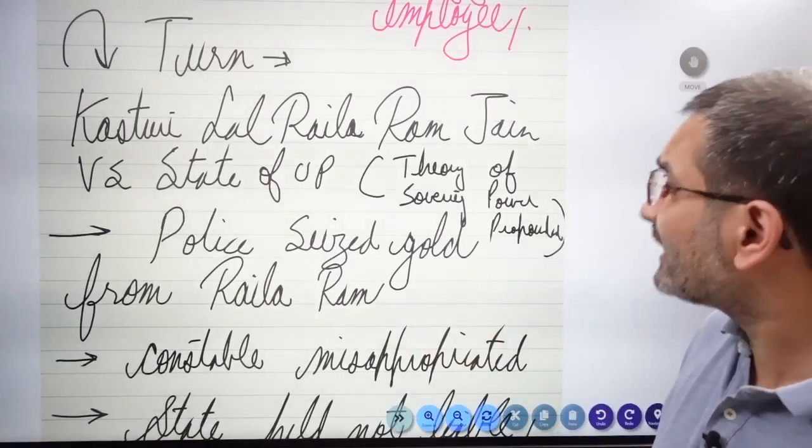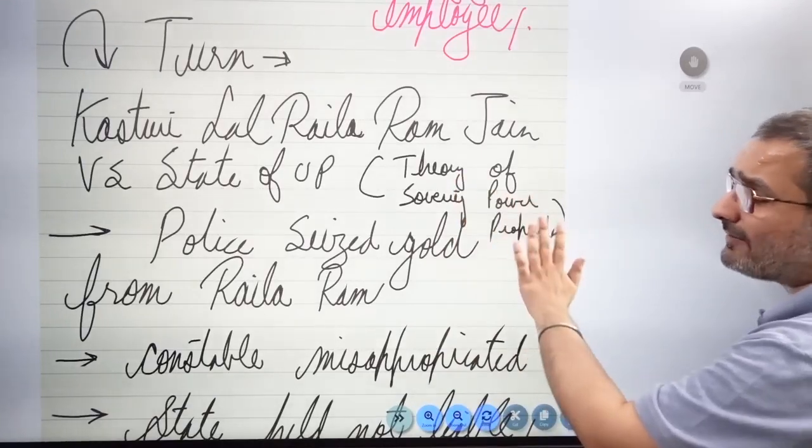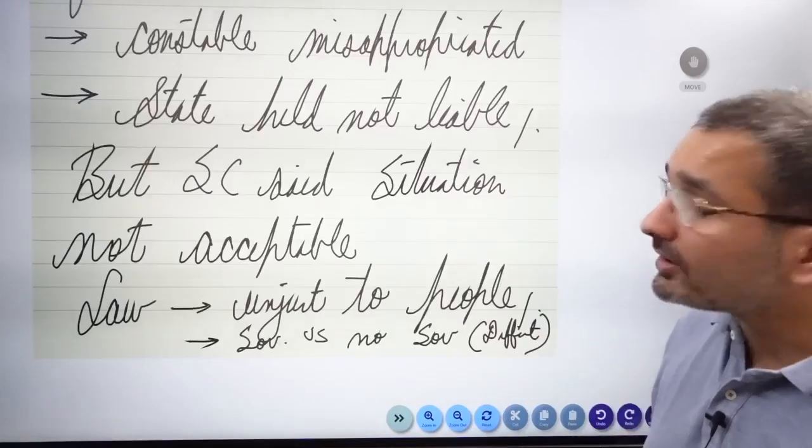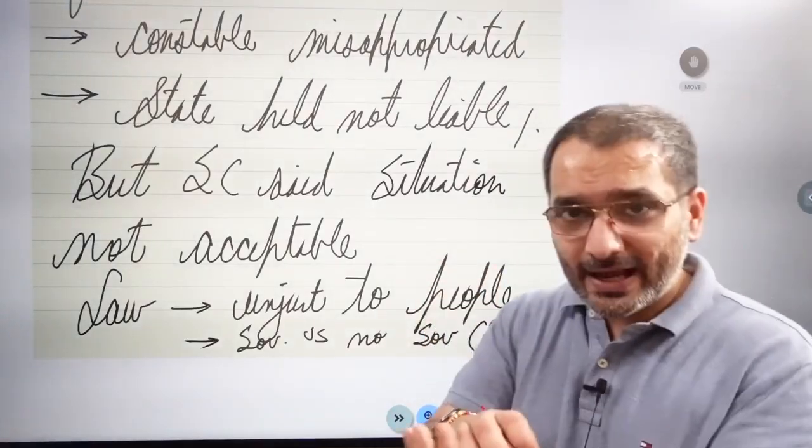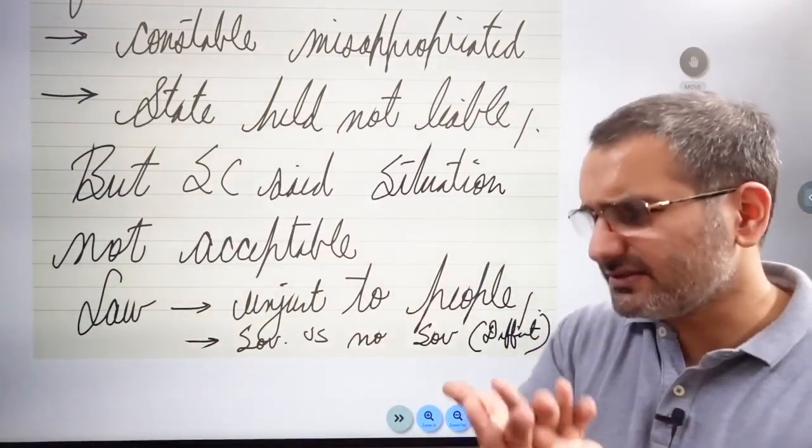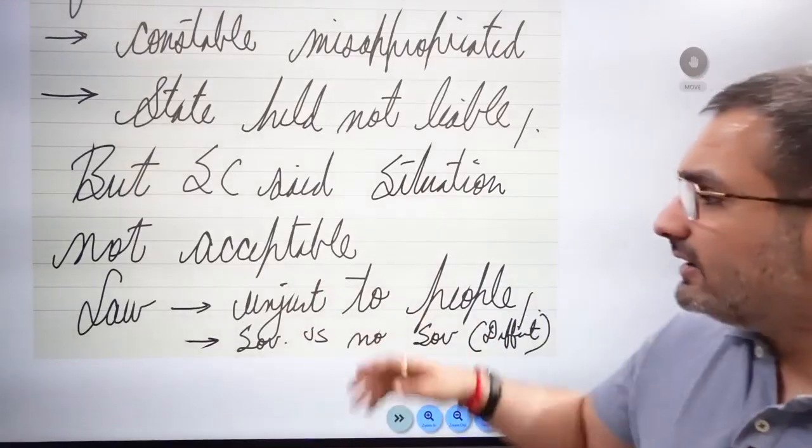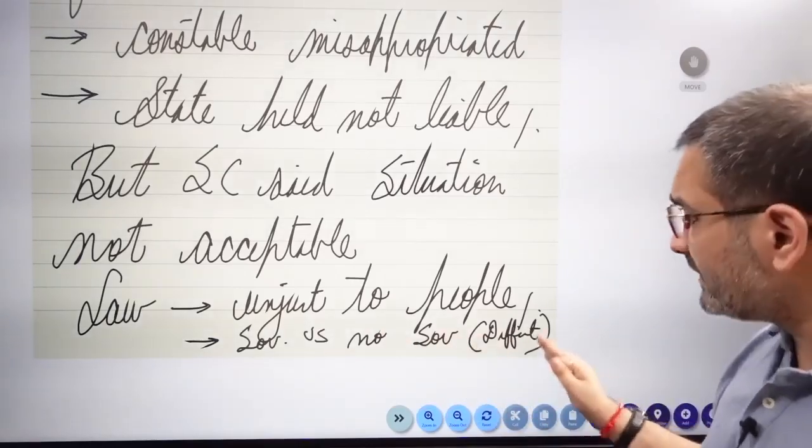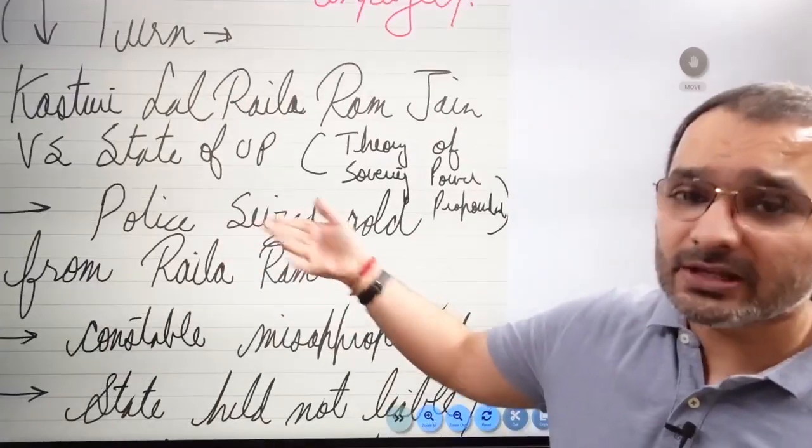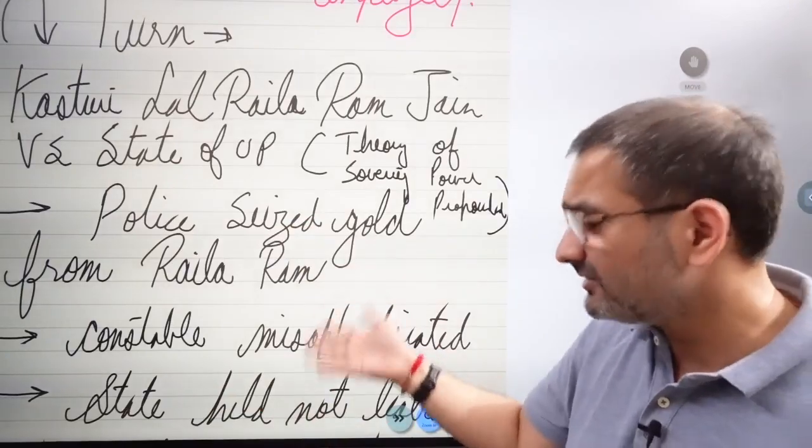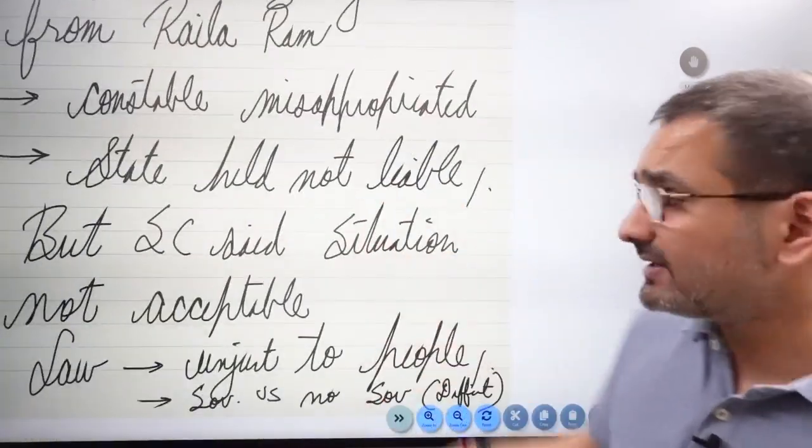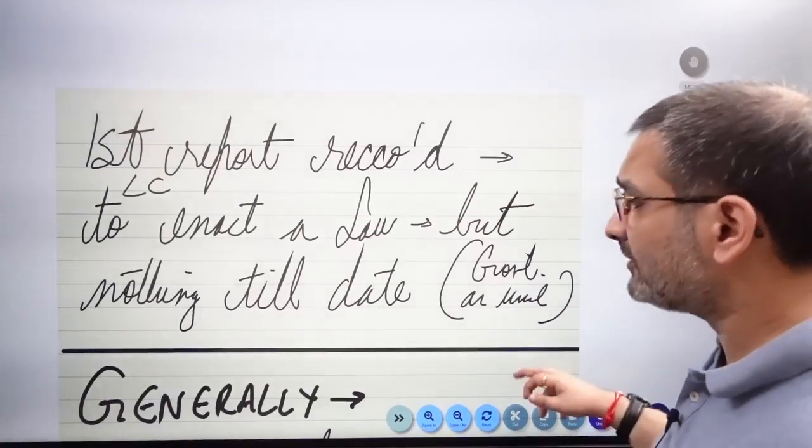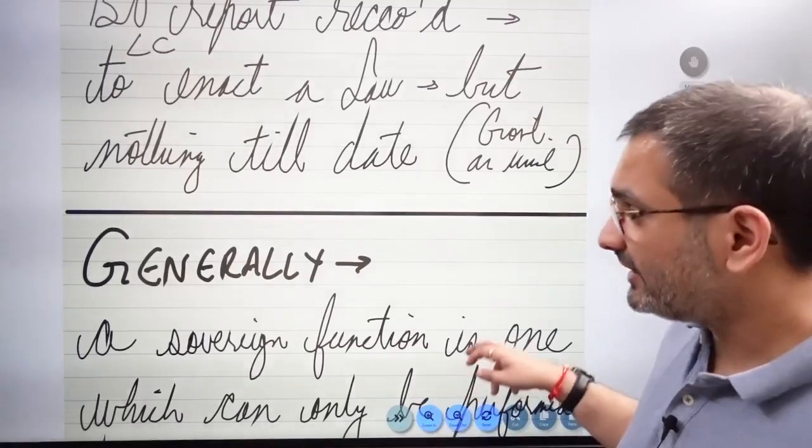Courts are very unclear, so this is what you'll write as a criticism that the judicial approach is very unclear. Supreme Court took a U-turn in Kasuri Lal Raila Ram Jain vs State of UP. The theory of sovereign power was propounded in this case. Police seized gold from Raila Ram, the constable misappropriated the gold. The state was held not to be liable. The Supreme Court said the decision is there but the situation is not acceptable. The law is unjust to people. Sovereign vs non-sovereign distinction is very difficult. That's why this case law is very important to mention in your answer.